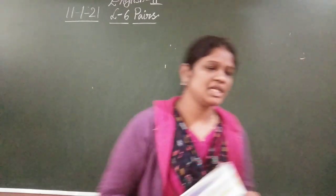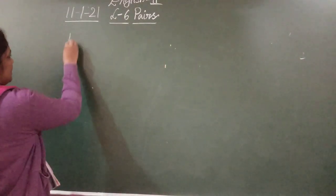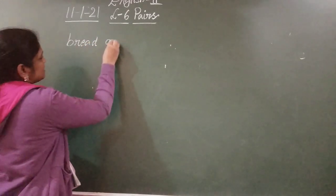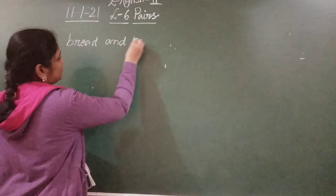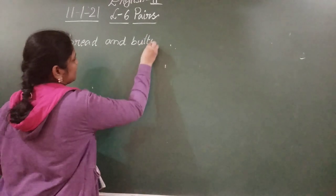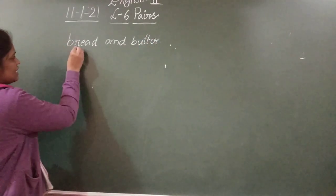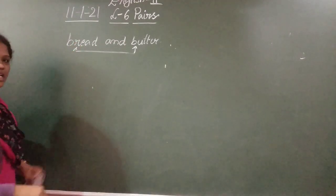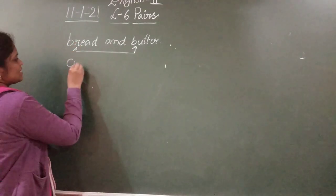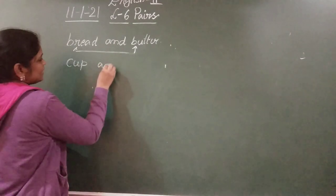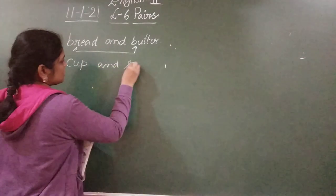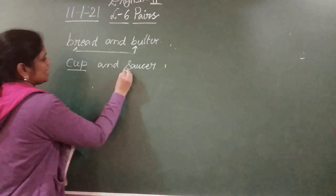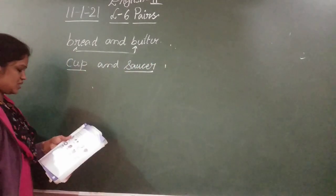For example, bread and butter. These two are the pair. Cup and saucer. This is the identical parts, right? Cup and saucer, these are the pair.